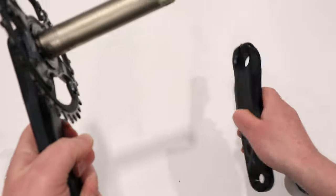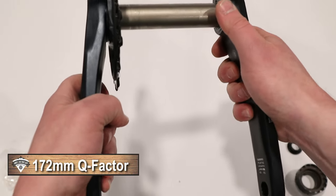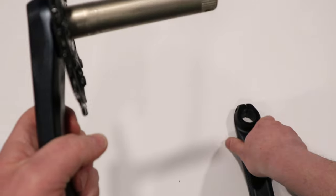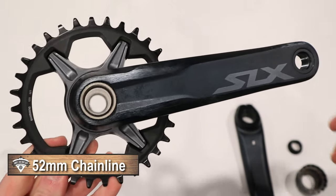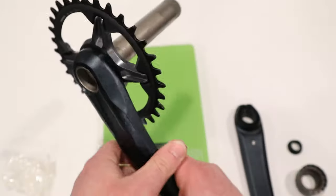The Q factor on the crank is going to be 172 millimeters, so that's the width of the crank arms there. And the chain line is going to be 52 millimeters on these new cranks. So let's go ahead and find out what all of this weighs.